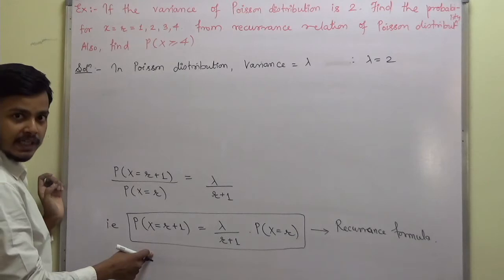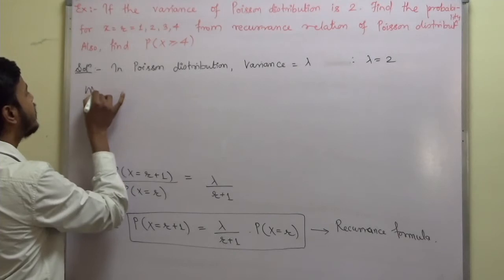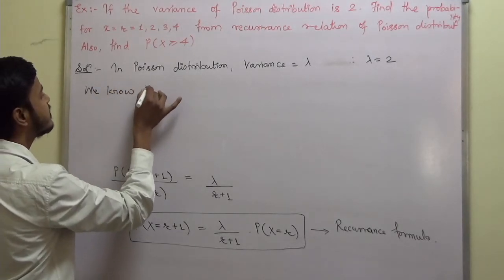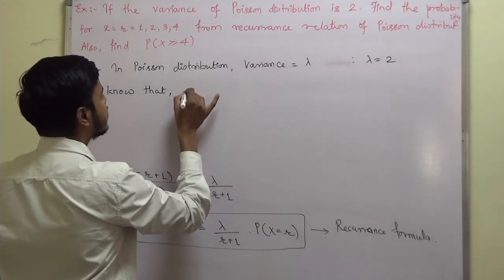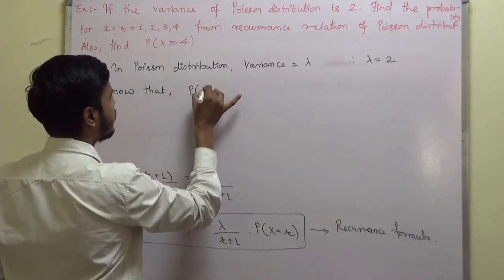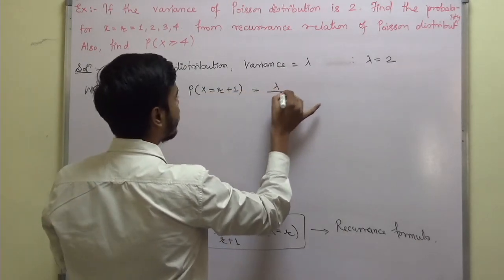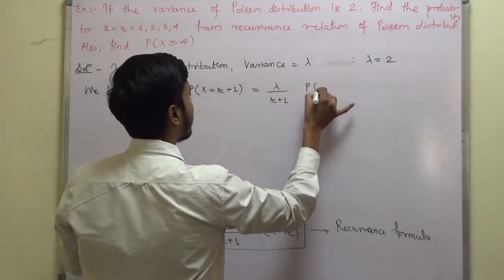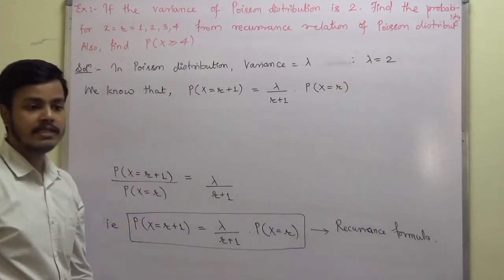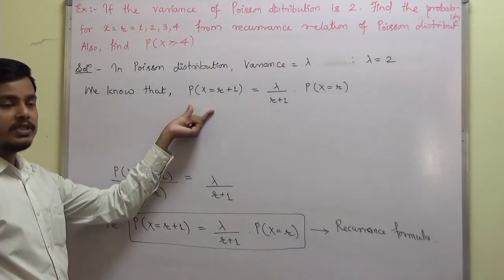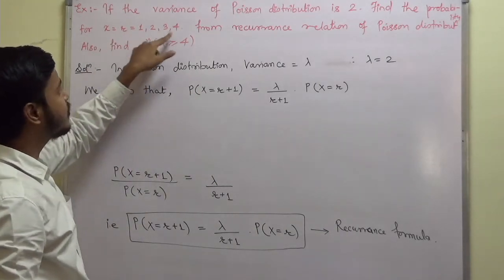We know the recurrence relation: P(X = r+1) = lambda upon (r+1) into P(X = r). With lambda = 2, we need to find probabilities for x = 1, 2, 3, 4 by putting r = 0, 1, 2, and 3 respectively into this relation.